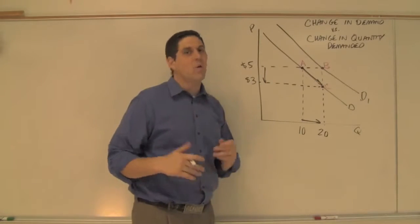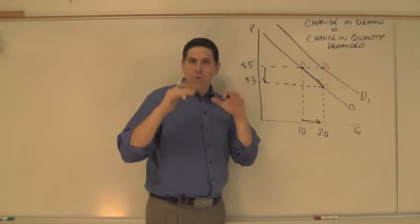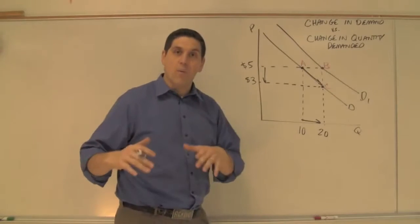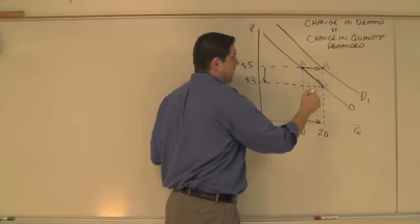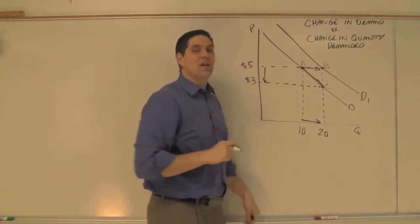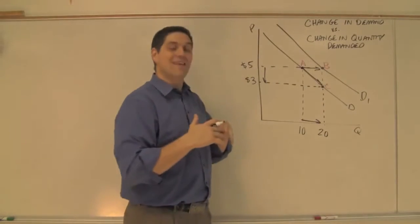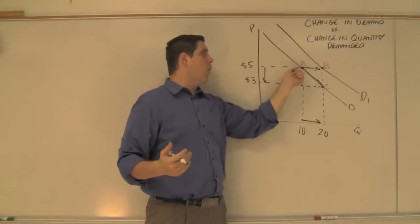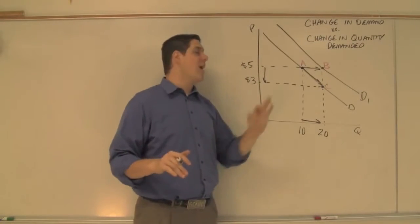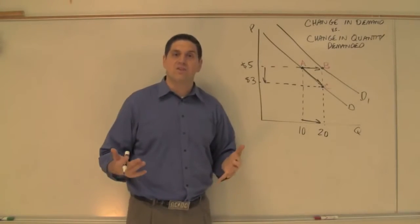Now, how else can we get from 10 to 20? Well, instead of the price lowering, some other factor. One of the five shifters of demand can cause us to go from A to B. A to B is a change in demand. It's a shift in the entire curve. At price 5, for some reason, now people want even more at that same price. So the whole curve shifts over, and that's because of one of the five shifters.